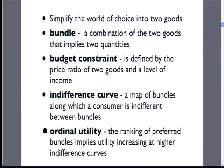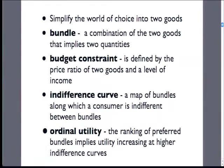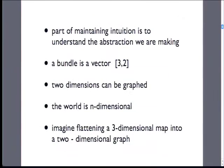We'll work through this using ordinal utility. Utility is the well-being of the consumer when consuming goods. Cardinal utility assigns an actual numerical ranking; ordinal utility just tells us the order — we know what's better. We can rank bundles: I'd rather have this bundle than that one, I'd rather be on a higher indifference curve than a lower one. Getting to a higher indifference curve means going to a higher level of utility. These are assumptions about consumers being able to rank preferences.